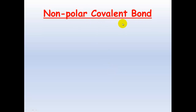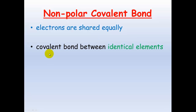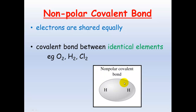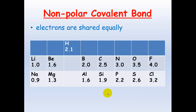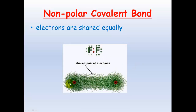Nonpolar covalent bonds occur when electrons are shared equally between atoms — specifically when a covalent bond forms between identical elements, such as O₂, H₂, or Cl₂. Because both atoms have equal electronegativity, they share the electrons equally. For example, two fluorine atoms both have an electronegativity of 4.0, so neither atom has a greater pull and the electrons are shared evenly.